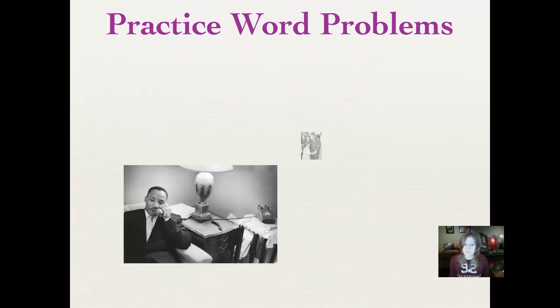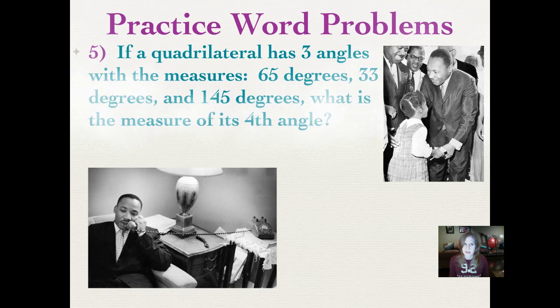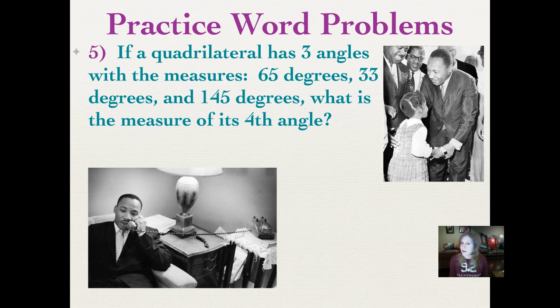Let's keep going. There's Martin Luther King talking on an old-timey telephone - it's not really that old-timey, that's the kind of phone I talked on when I was a kid. Number five: if a quadrilateral has three angles with the measures 65 degrees, 33 degrees, and 145 degrees, what is the measure of its fourth angle? This is similar to the way we found the missing angles of a triangle, so use that same strategy. Pause it, figure it out, and push play when you're ready.